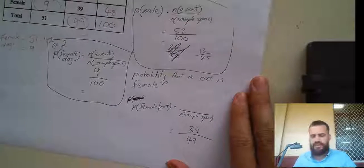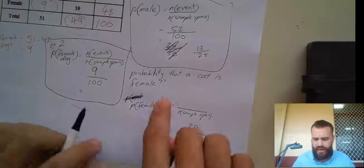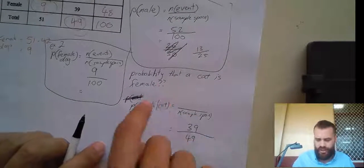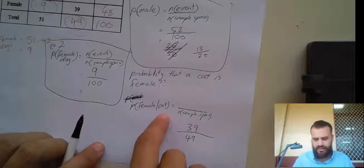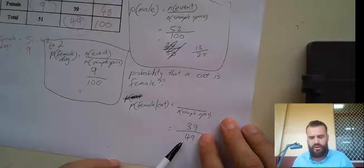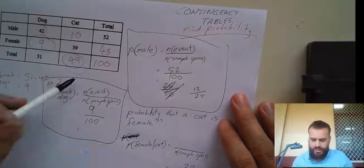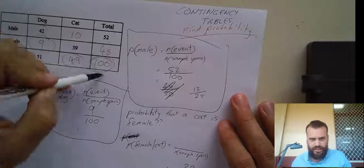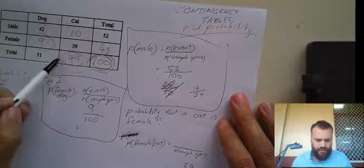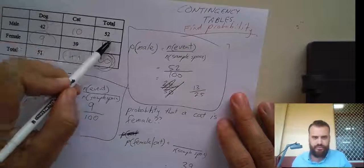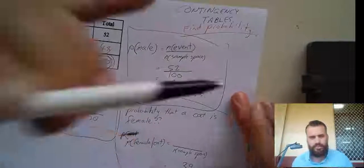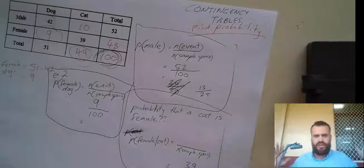Okay, and that's it. So, the probability that a cat is female, or the probability that a cat is female given that it's a cat, is equal to 39 in 49. So, you need to be careful about the question that they ask. Sometimes the sample space they're referring to is this, but sometimes it might be one of these numbers as well. That was what our third example was all about. Contingency tables.